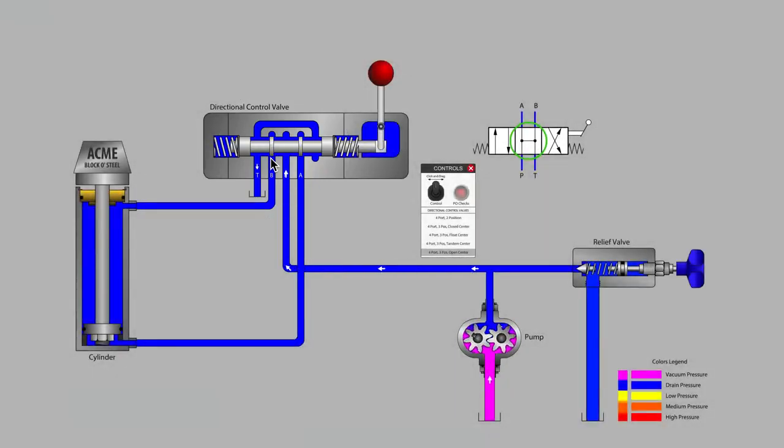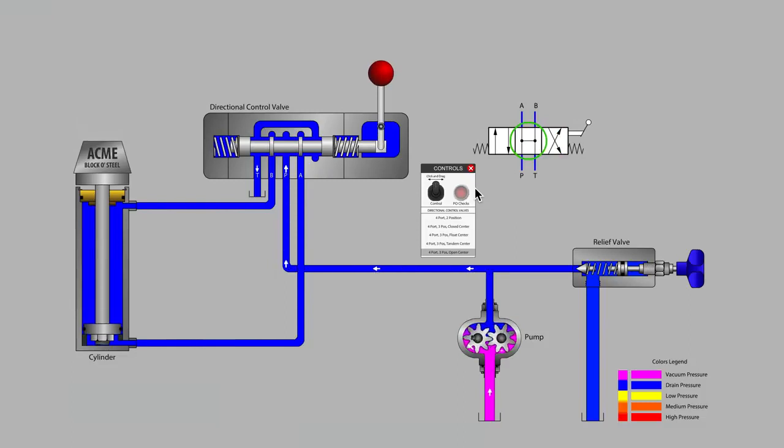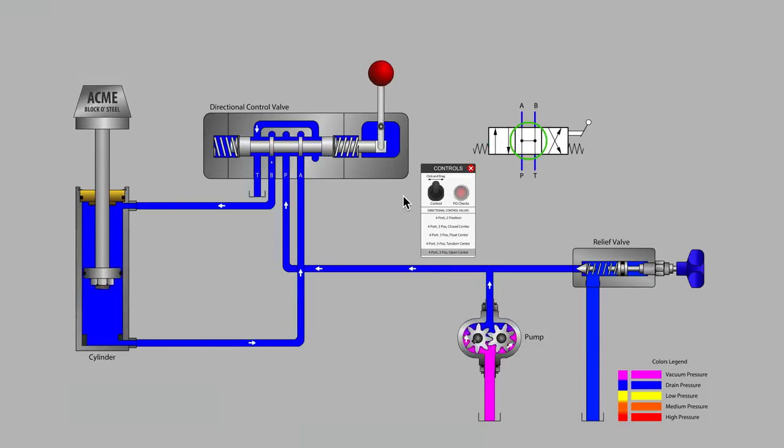To achieve cylinder motion, the valve spool must be moved all the way to the left or the right in order to direct the pump's flow to the A or B work port. While it is clear that this open center valve does not provide any position holding for the cylinder,